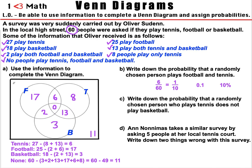Part C: write down the probability that a randomly chosen person who plays tennis does not play basketball. Importantly, the person has already been chosen from those who play tennis. How many people play tennis? 27. And how many of them don't play basketball? There are 6 who play football and tennis, and 8 who play only tennis — so that's 14. The probability is 14 over 27. That can't be simplified, and it's difficult to write as a decimal or percentage, so a fraction is the suitable answer.